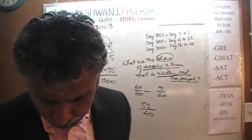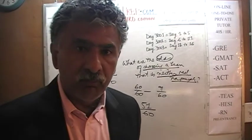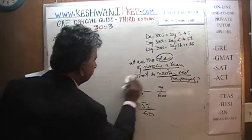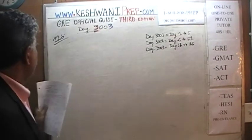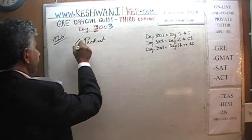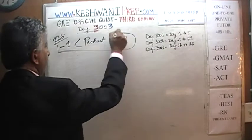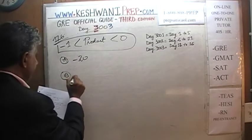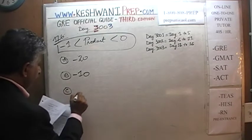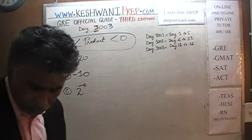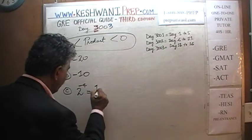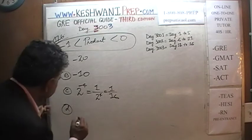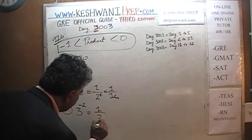On page 126: which of the following numbers have a product that is between negative 1 and 0? We are given four quantities. A is negative 20, B is negative 10, C is 2 raised to negative 4 — which is 1 over 2 to the 4th, which is 1 sixteenth — and D is 3 raised to negative 2, which is 1 over 3 squared, which is 1 ninth.